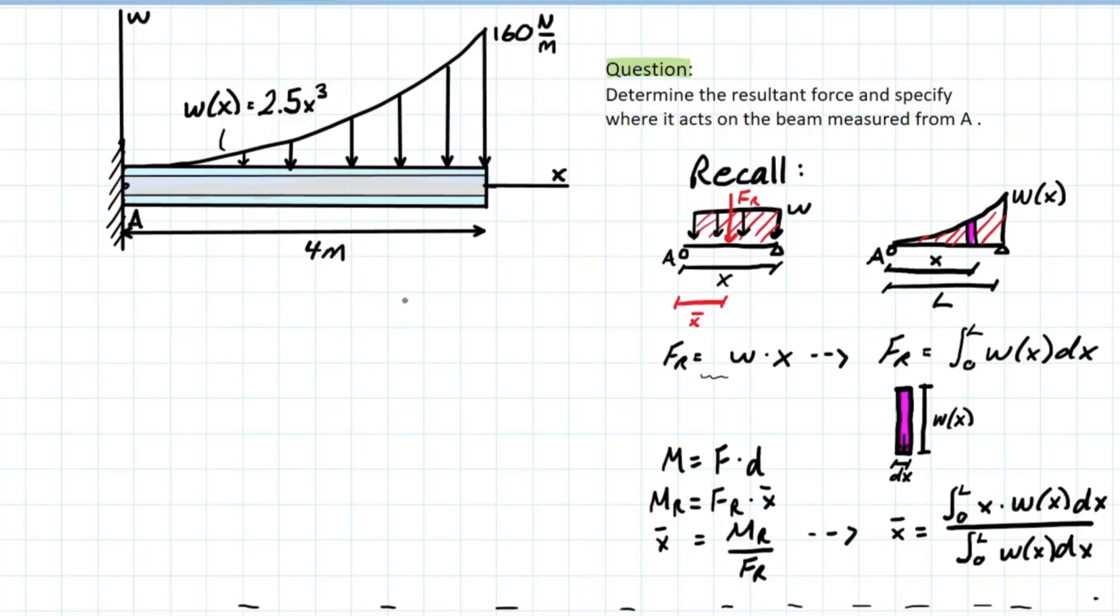So you see at the end here, at 4 meters, you have 160 N per meter because you plug in 4 meters into the w function, that's the value it's going to give you.